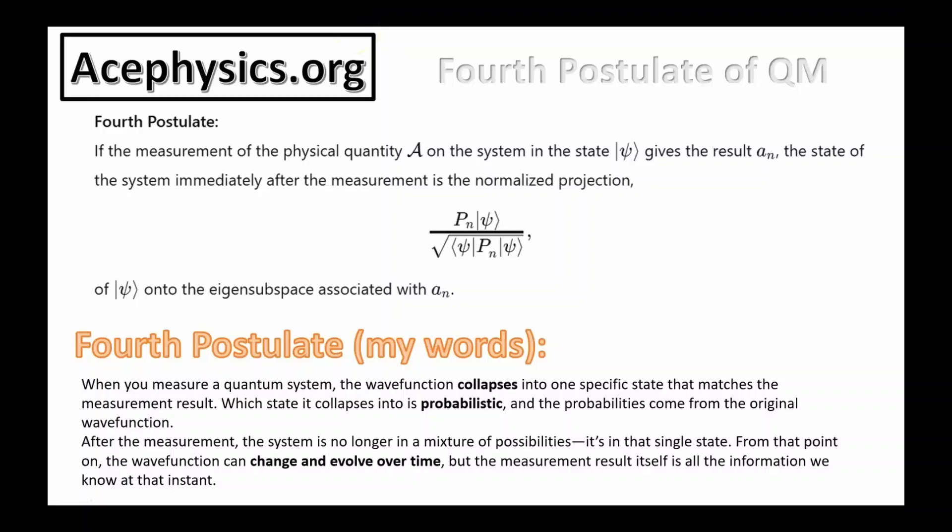Now we're under the fourth postulate of quantum mechanics. Here's the textbook explanation, and here's the fourth postulate in my own words. I'll start reading here. When you measure a quantum system, the wave function collapses into one specific state that matches the measurement result. Which state it collapses into is probabilistic, and the probabilities come from the original wave function. After the measurement, the system is in a single state. From that point on, the wave function can change and evolve over time. But the measurement result itself is all the information we know at that instant.